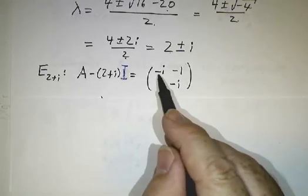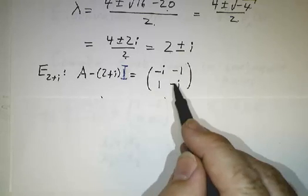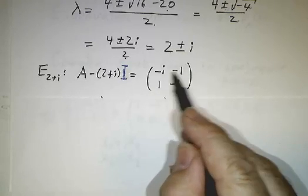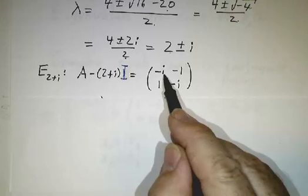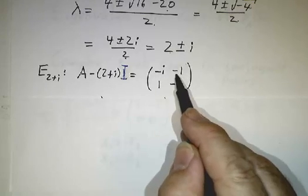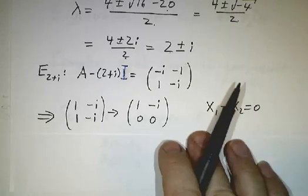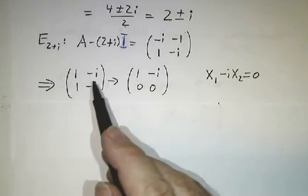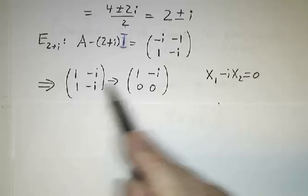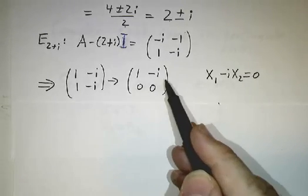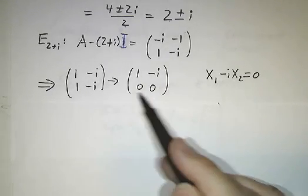And you row reduce them to find a basis for the null space. In this case, this is A-(2+i)I. And if you multiply the top row by -i, -i times i is 1, -1 times -i is -i. And then subtract the first row from the second. Bingo! You got yourself the reduced row echelon form.